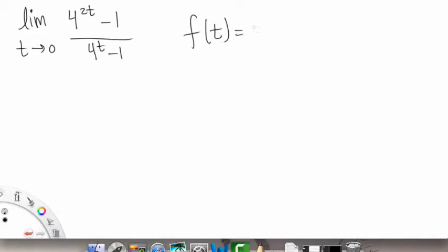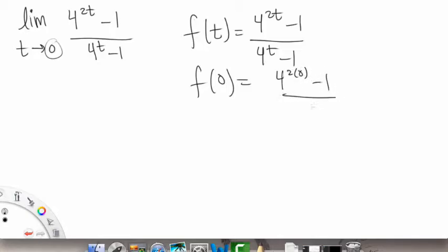So f of t is equal to 4 to the 2t minus 1 over 4 to the t minus 1. What happens if we plug in a 0 for t? So if we plug in that 0, what do we get? So we have 4 to the 2 times 0 minus 1 over 4 to the 0 minus 1,